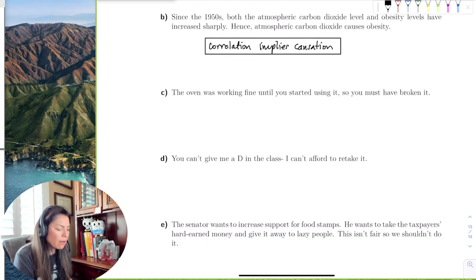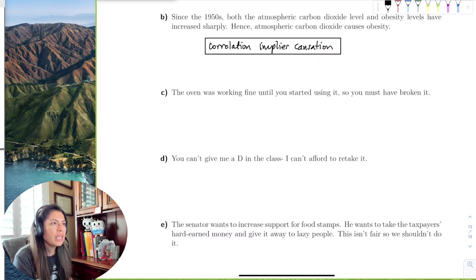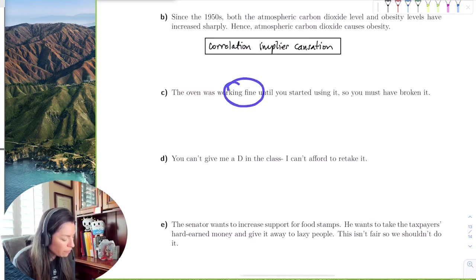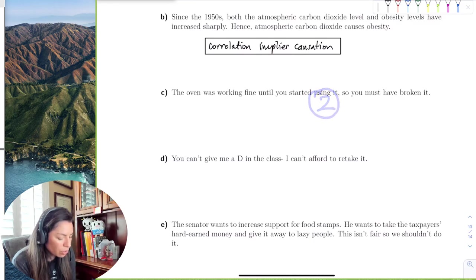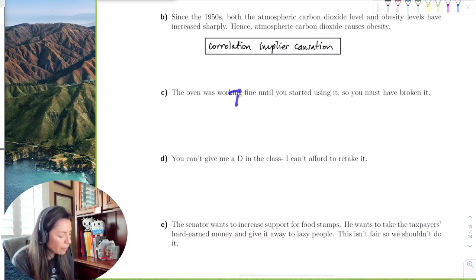This is the best one. The oven was working fine until you started using it, and now it's broken. So you must have broken it. You're like, well, no, I just used it once. Like, just because they use the oven doesn't mean that person broke it, right? So the oven was fine until you started using it. And this is a common argument, right? And then, so because this happened first, right? It was working fine first. Then someone started using it, so the conclusion is that this person broke it. So this happened first, second, and now this is the conclusion.